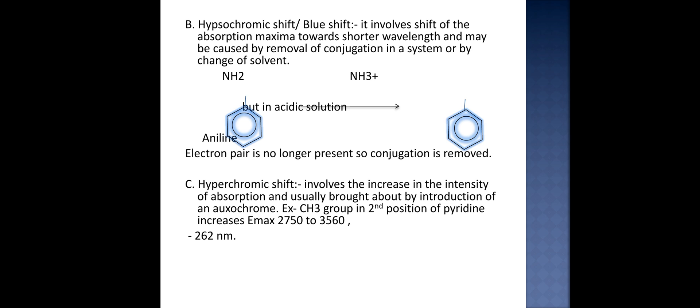Third is hyperchromic shift. It involves the increase in the intensity of the absorption and is usually brought about by introduction of an auxochrome. Example: methyl group in the second position of pyridine increases epsilon max from 2750 to 3560, and its wavelength is 262 nanometers.